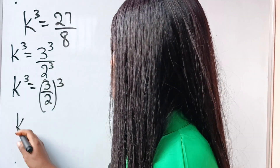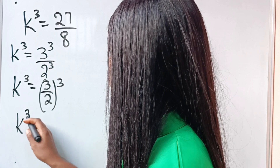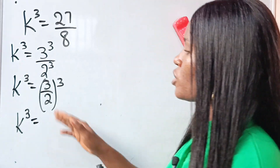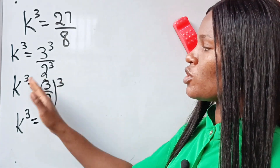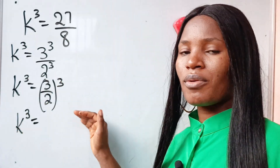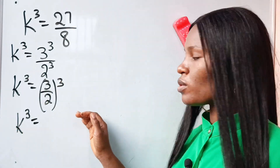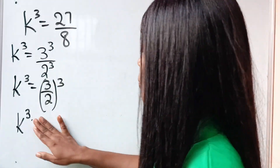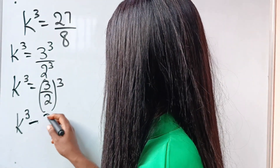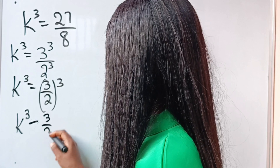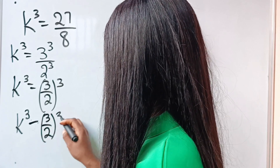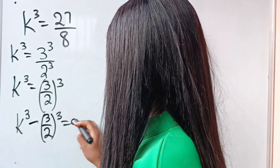So we have k to the power of 3 equals — now let's transfer this to the other side of the equation so that we equate it to 0. So we have k to the power of 3 minus (3/2) to the power of 3 is equal to 0.